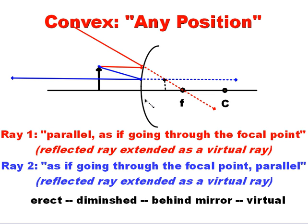It is diminished, it's erect, it's behind the mirror, and of course that's going to make it virtual. And that's every scenario you can see with a curved mirror.